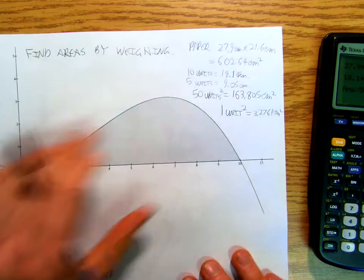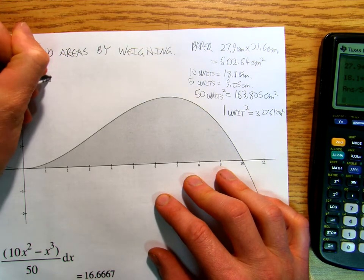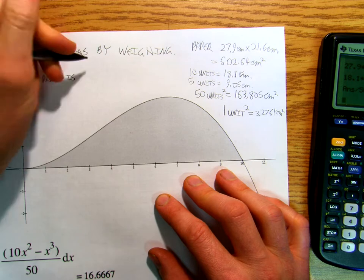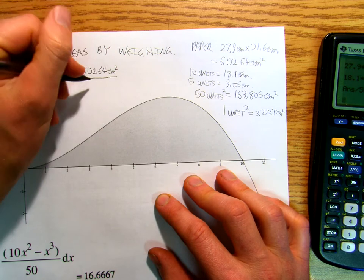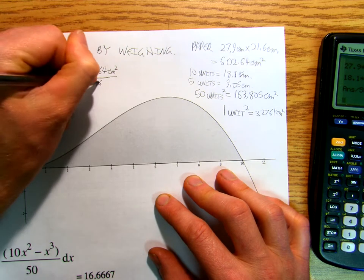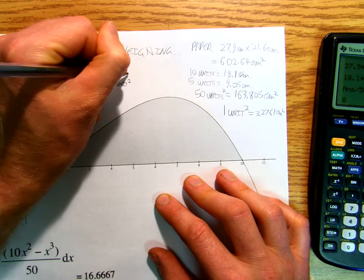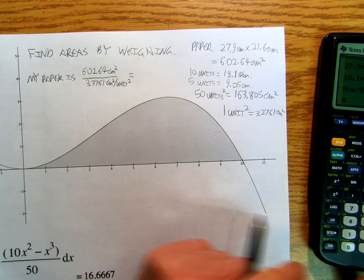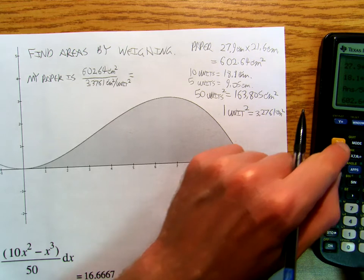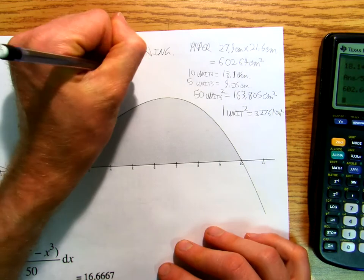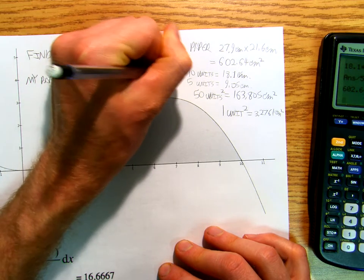So that means that my paper, I take 602.64 divided by my answer. And I get 183.95 units squared.